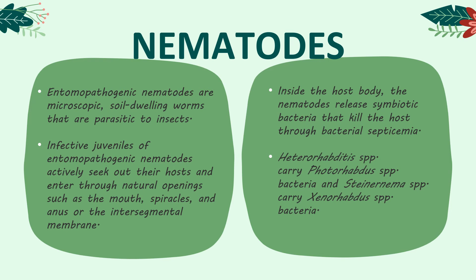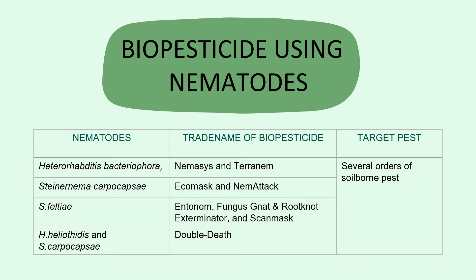The last one is nematodes. Entomopathogenic nematodes are microscopic, soil-dwelling worms that are parasitic to insects. Infective juveniles of entomopathogenic nematodes actively seek out their host and enter through natural openings such as the mouth, spiracles, anus, or the intersegmental membrane. Inside the host body, the nematodes release symbiotic bacteria that kill the host through bacterial septicemia. For example, Heterorhabditis species carry Photorhabdus bacteria and Steinernema species carry Xenorhabdus bacteria. The table below shows biopesticides using nematodes; all of the biopesticides target several orders of soil-borne pests.